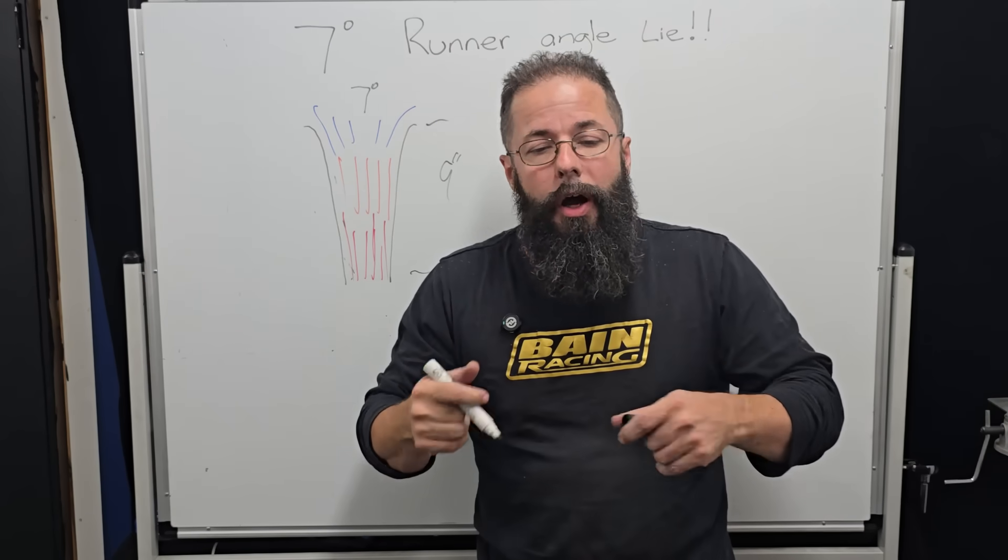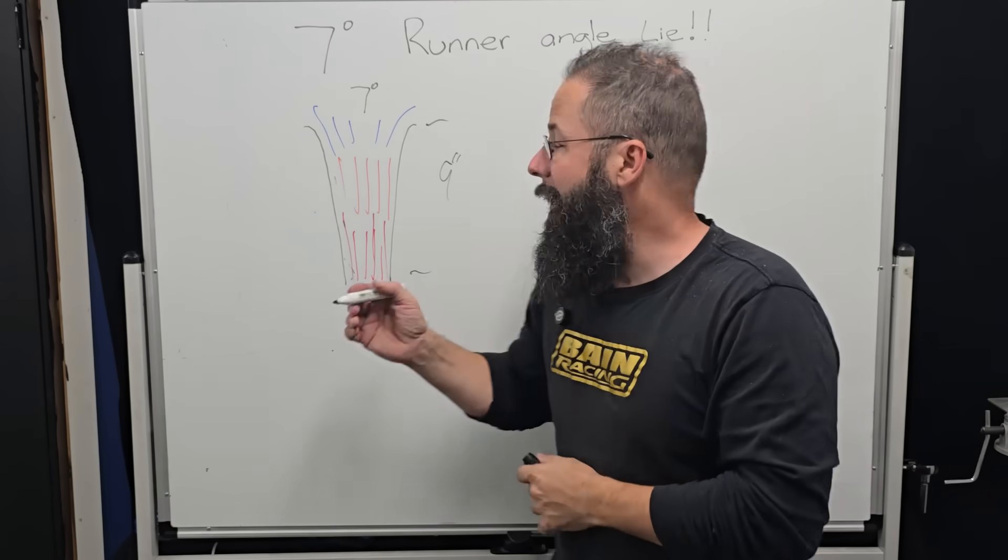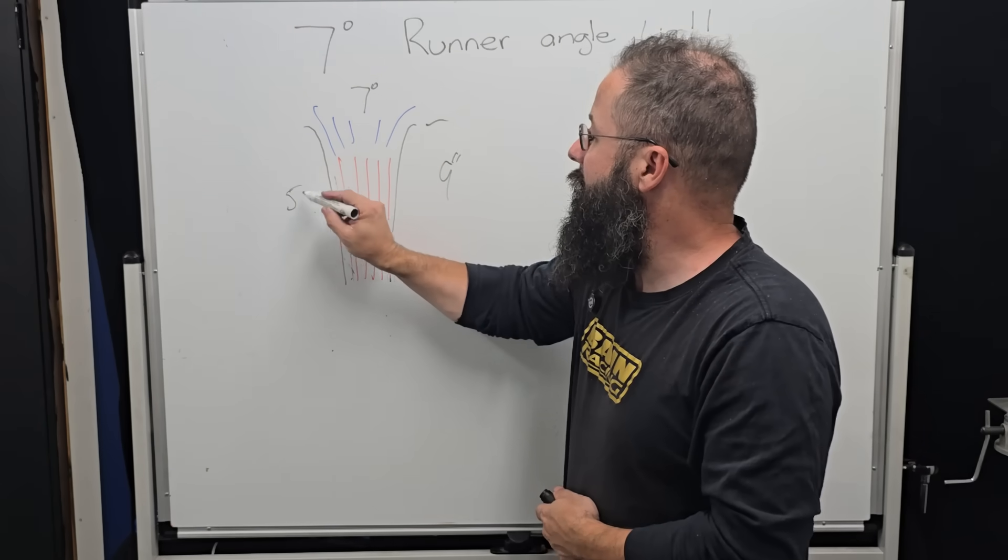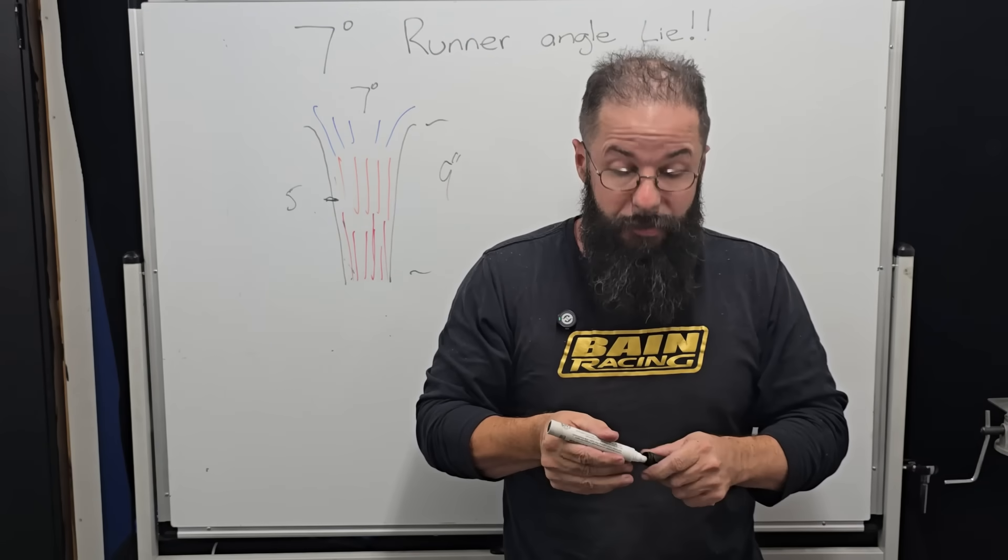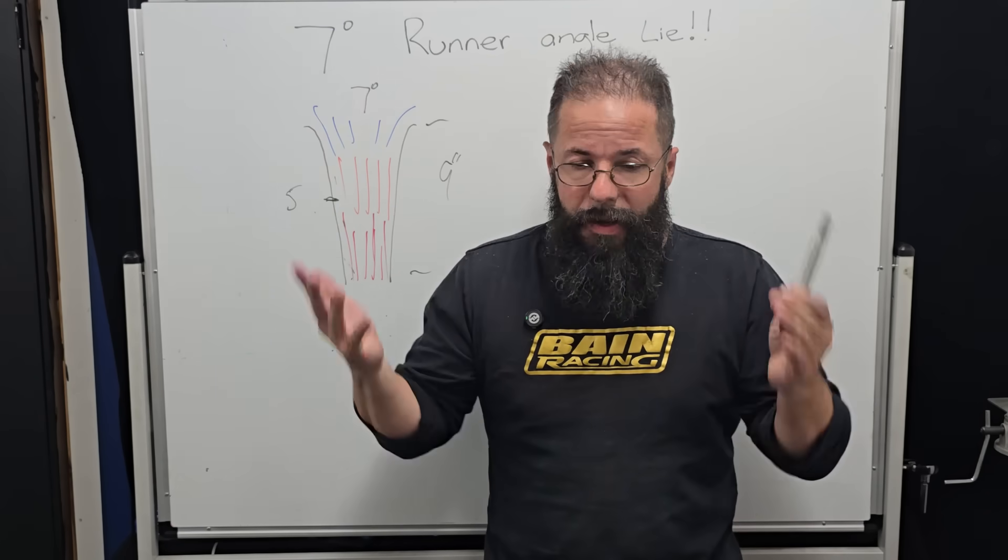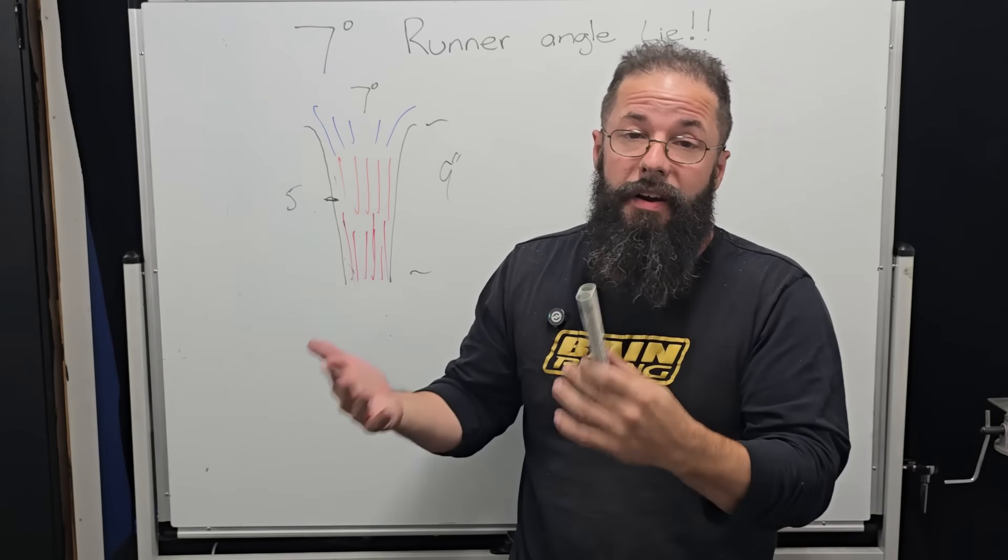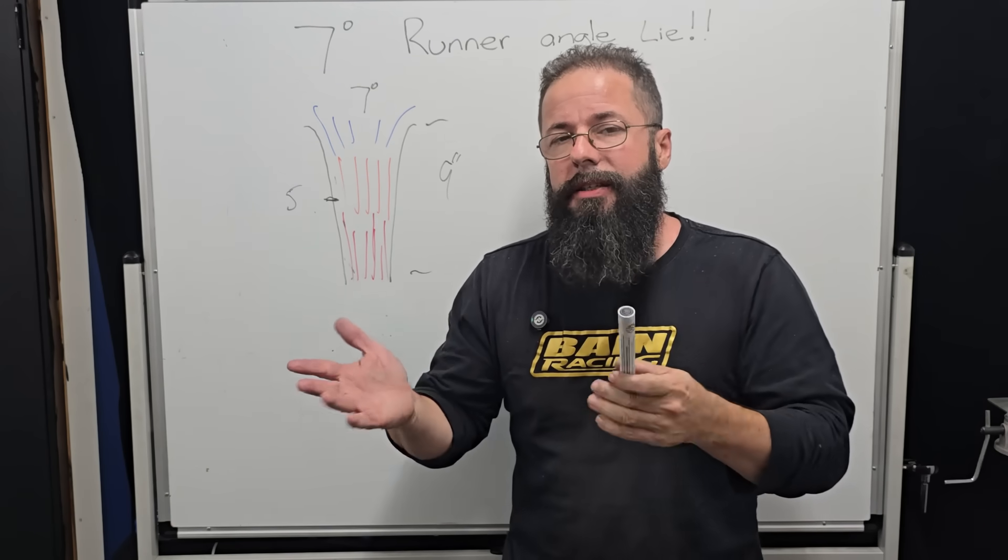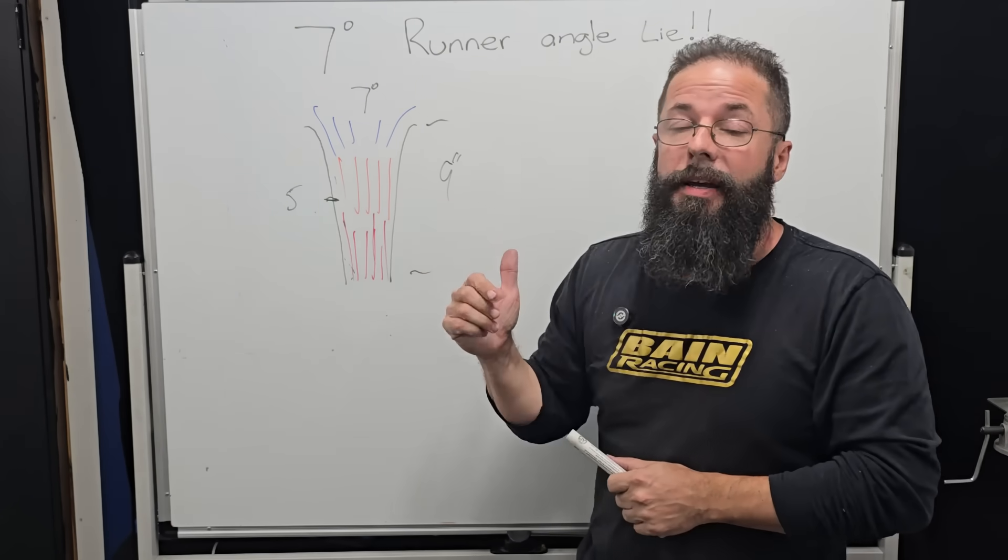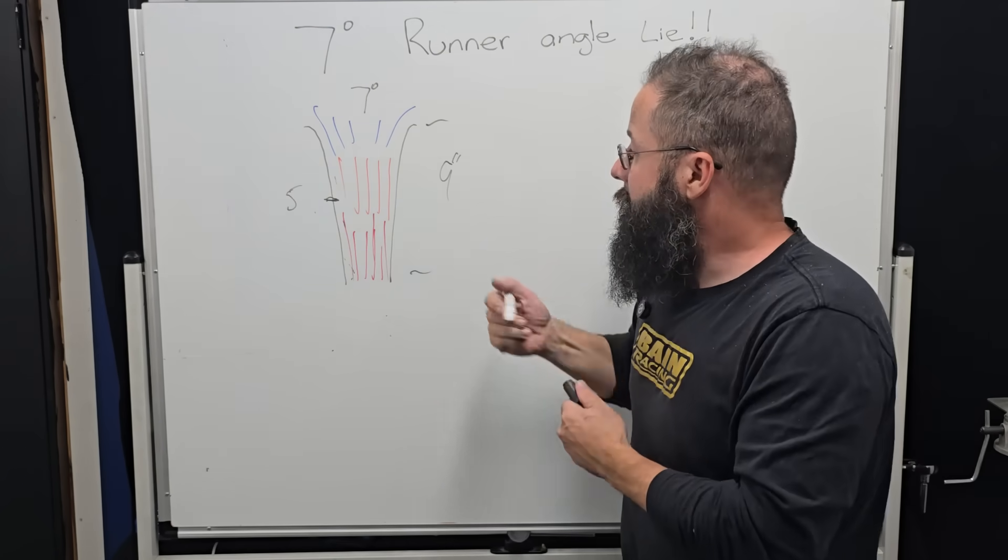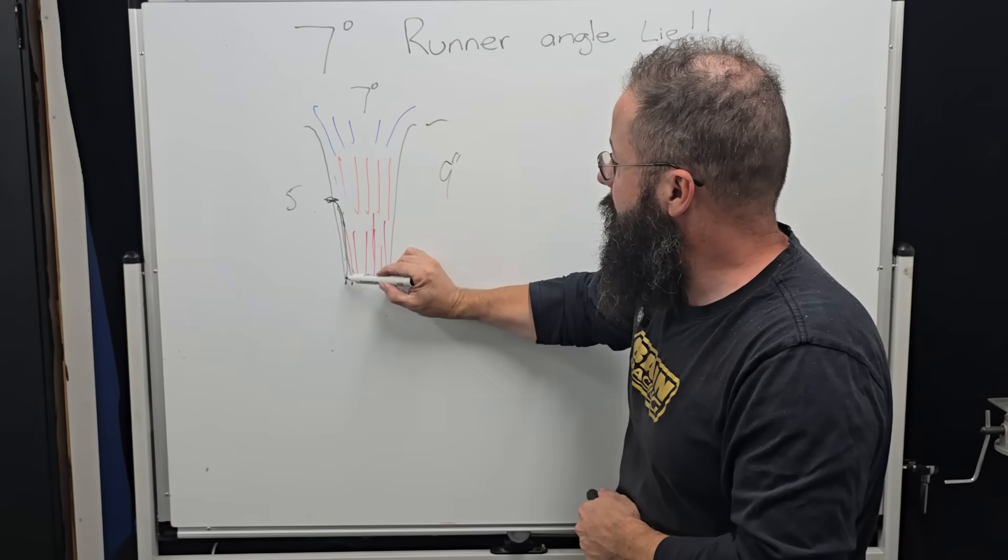But our bonnet height or the restriction in the manifold shape or the V is only going to allow for say five inches. So the runner can only be this long. Is the taper going to be the same? Now if you followed my videos for long enough, you'll know then no it's not. Now we need a different angle. And the reason being is because we have to increase airspeed sooner, we have to make that runner narrower in the taper.